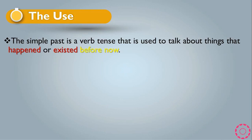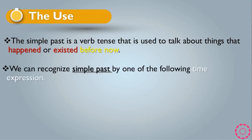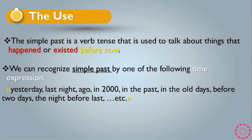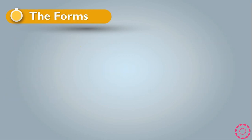Past simple is a verb tense used to talk about things that happened or existed before now. We can recognize simple past by one of the following time expressions: yesterday, last night, ago, in 2000, in the past, in the old days, before, tonight, the night before last, and so on.